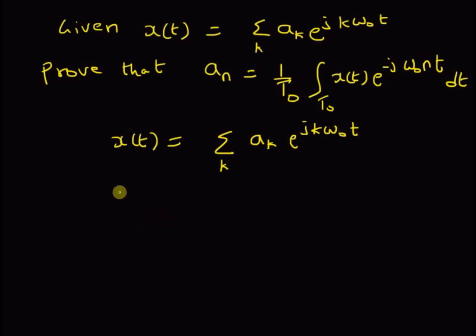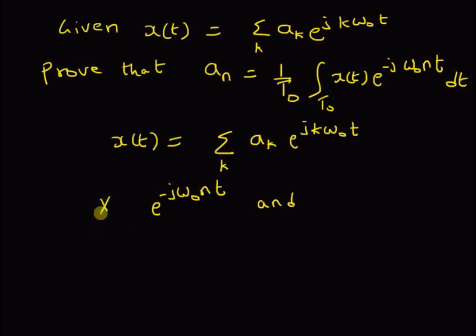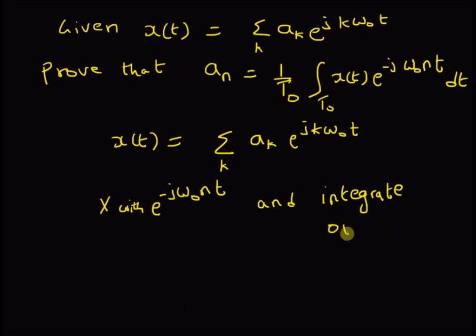Now we multiply on both sides with the exponential e^(-jnω₀t), and then integrate over the time period T₀.